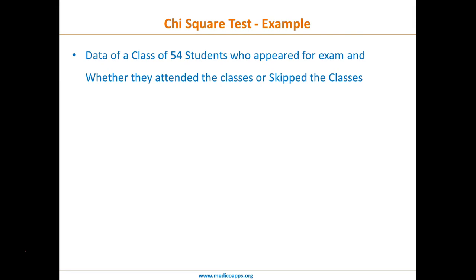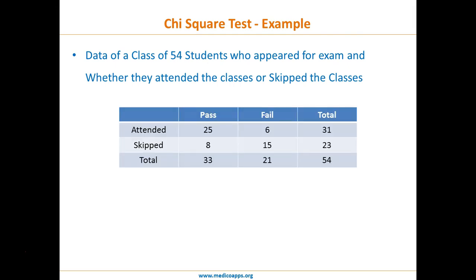Let's see an example. We have data from a class of 54 students who appeared for an exam, along with whether they attended classes or skipped. This is nominal data — students either attended (yes) or did not attend (no). Similarly, the result is also nominal: pass or fail. So this is the data we are going to analyze using chi-square.